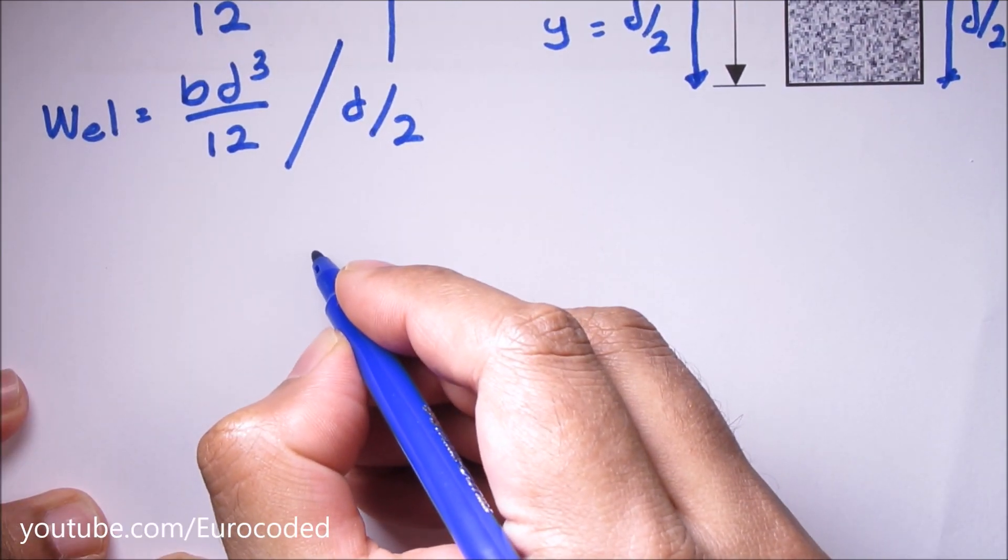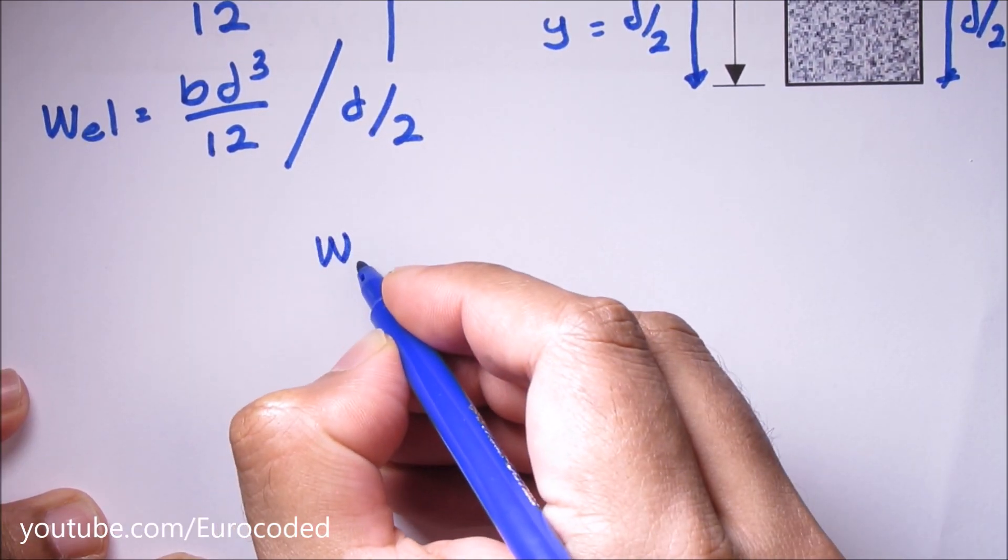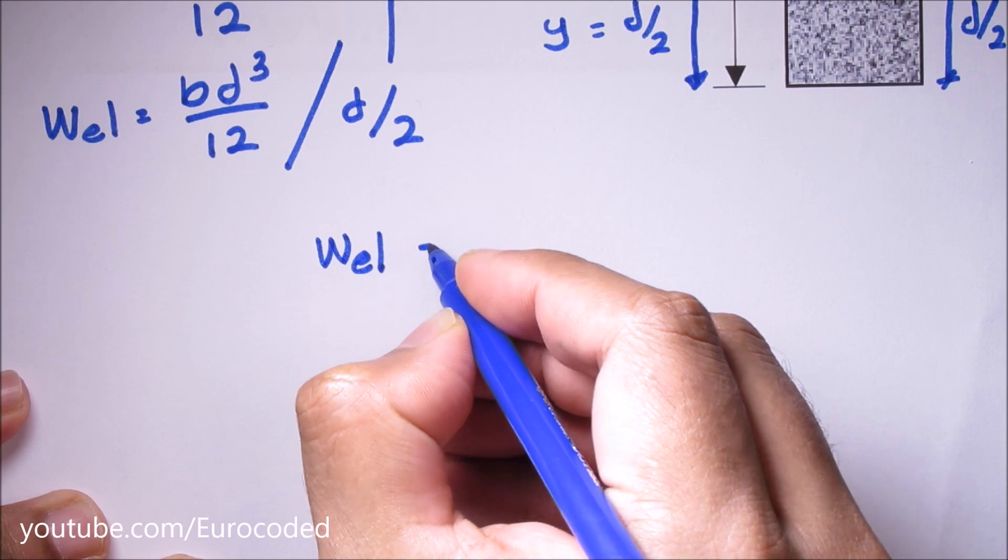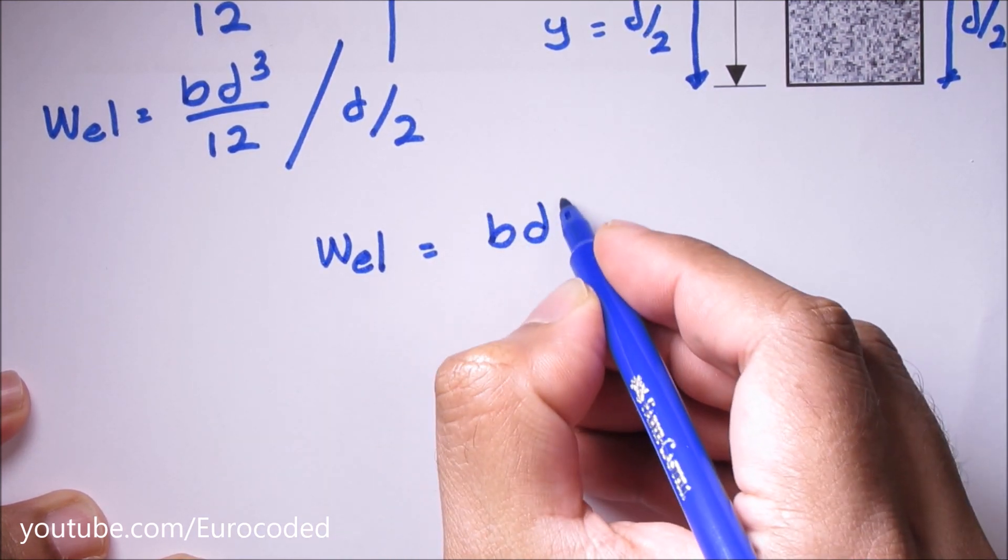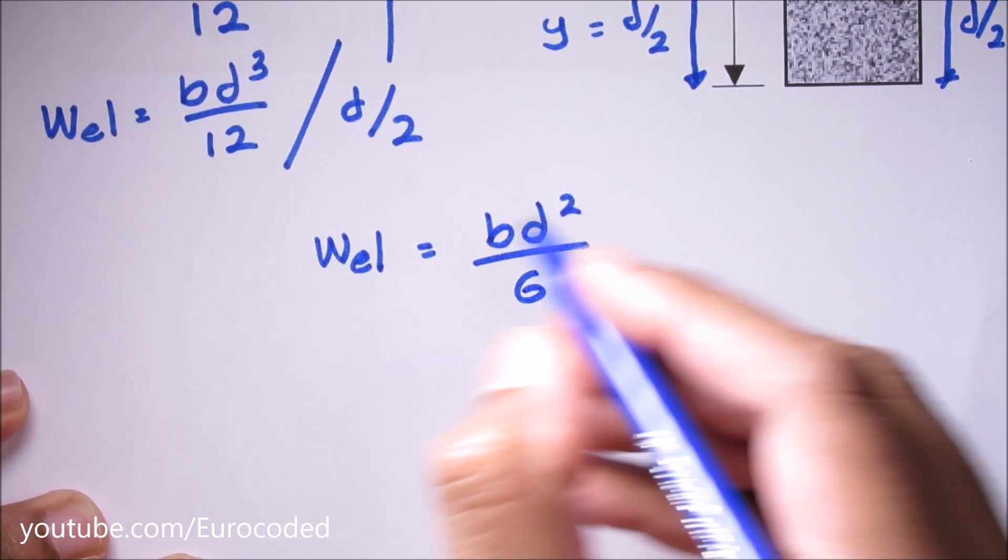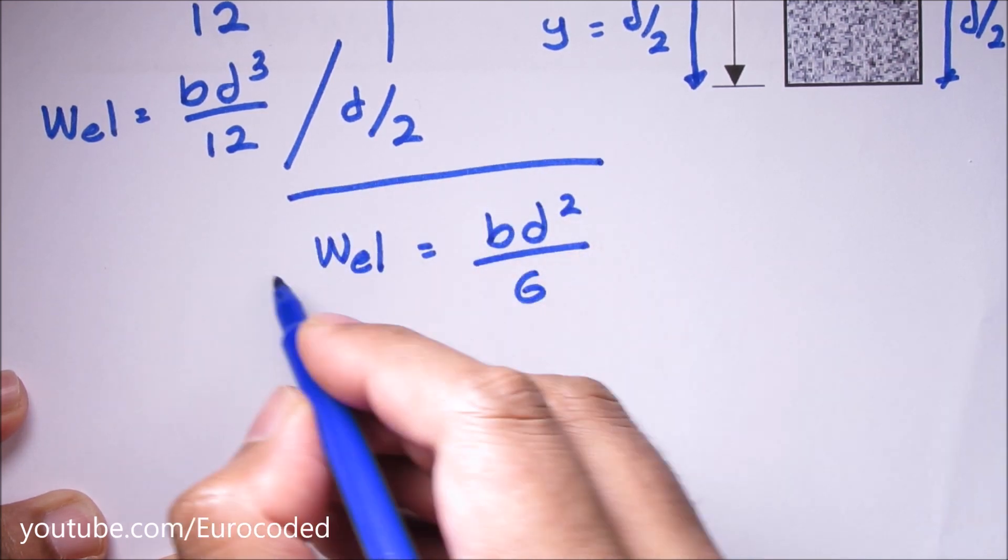So we can write elastic section modulus for the bottom fiber is equal to bd² over 6 for the rectangle we are looking at.